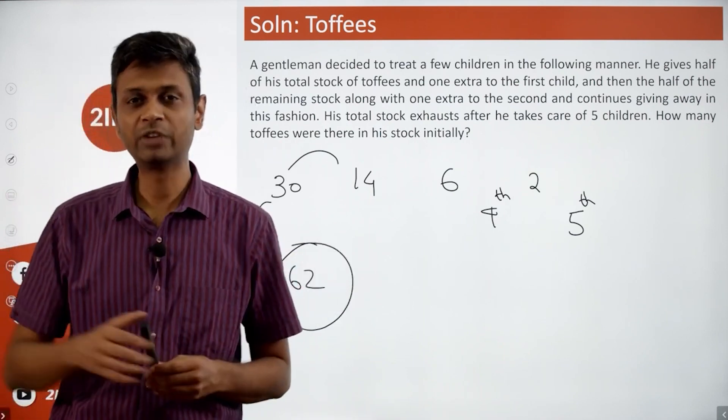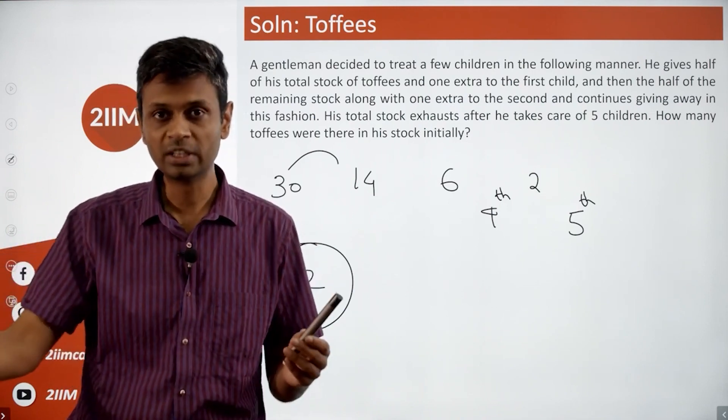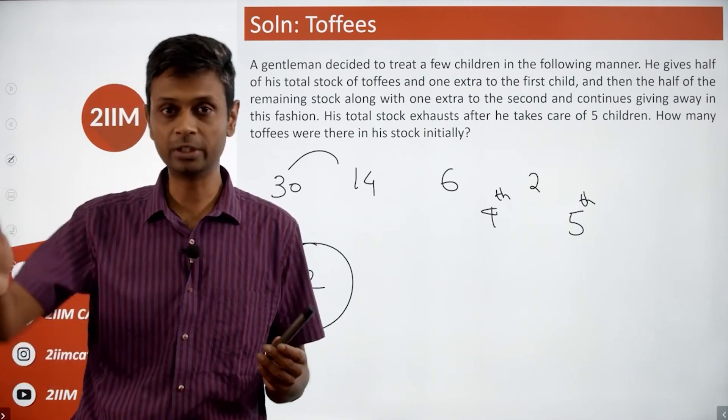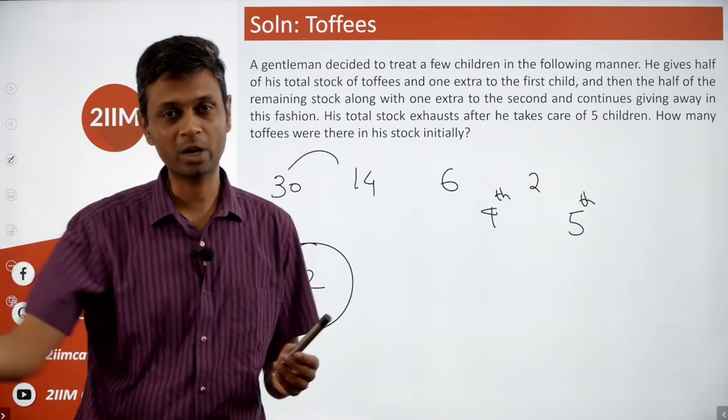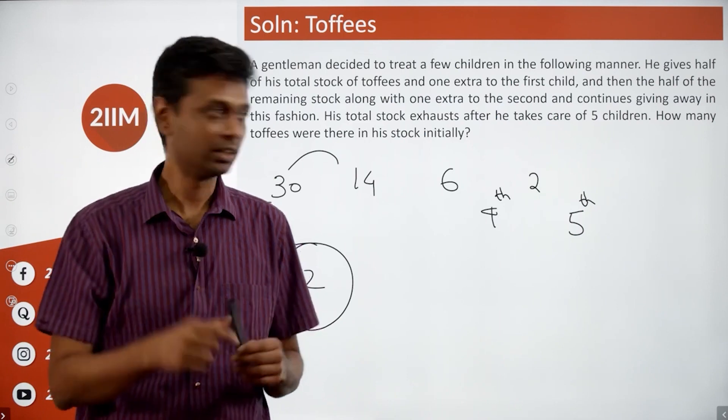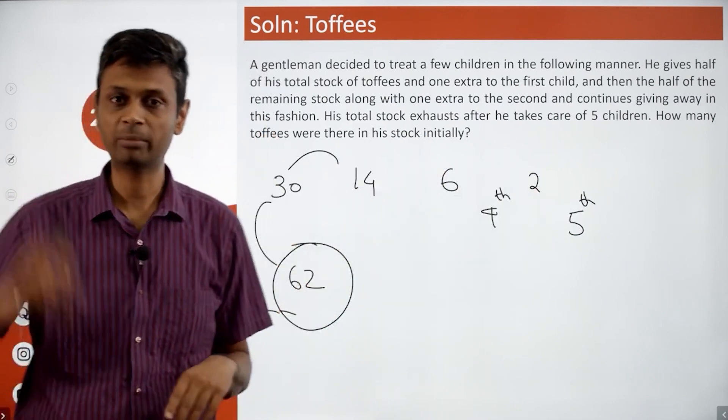And so these questions become very simple if you start from the last step backwards. He finally runs out of toffees after he has given to the fifth kid, so think about how much he had when he's going to the fifth kid and then just work backwards. Once you know the mechanics, it's plus one into two, plus one into two, plus one into two... no math after that.